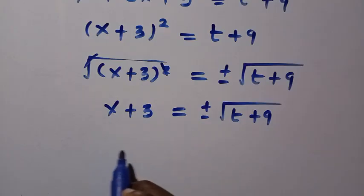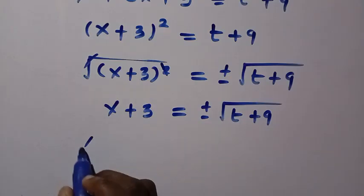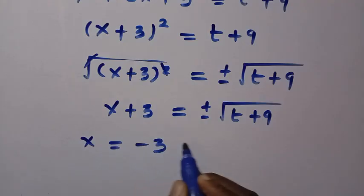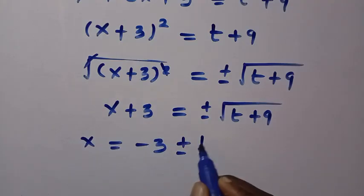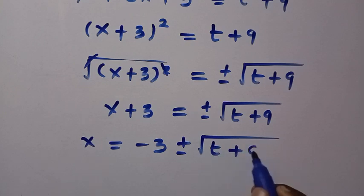Let's subtract 3 from both sides, so we have x = -3 ± √(t + 9).